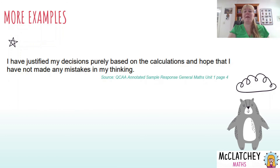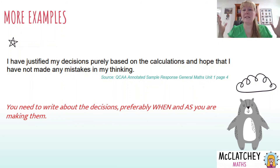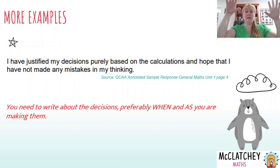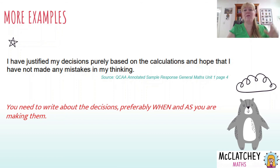Let's look at some student examples. 'I have justified my decisions purely based on calculations and hope I've not made any mistakes in my thinking.' That's not great — from QCAA you actually need to write about the decisions you've made, not just say you justified them. Justify them as you go, preferably when and as you make those decisions. If in your formulate section you chose a sample size of 30, explain right there why 30 — don't leave it to the end where it could be missed.